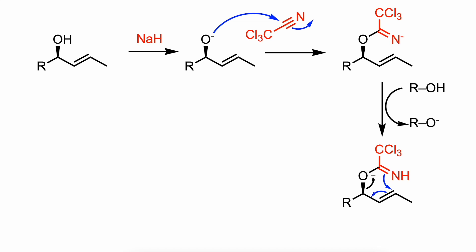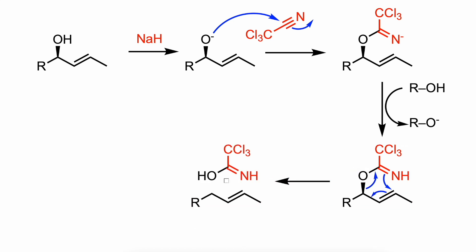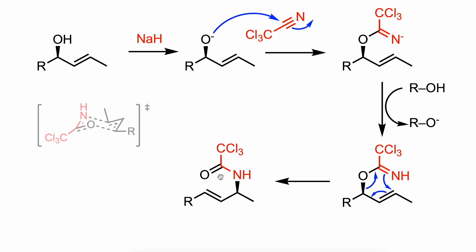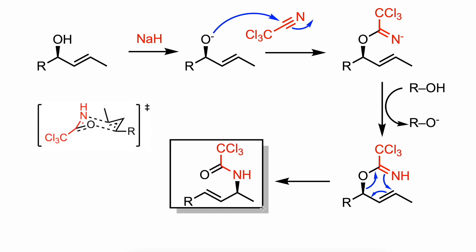Finally, a thermal 3,3-sigmatropic rearrangement delivers the allylic amide. Similar to the mechanism of the Claisen rearrangement, the Overman Rearrangement is a suprafacial concerted rearrangement that proceeds through a six-membered chair-like transition state.